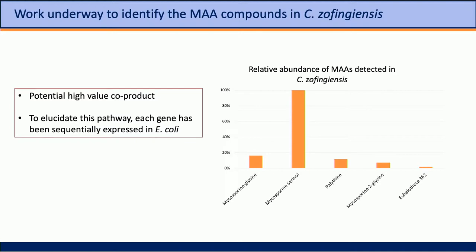In terms of genome mining, this may be of interest as a potential high-value co-product. Work is underway with a collaborator in Trent Northen's lab at Lawrence Berkeley National Lab to identify the MAA compounds in Chromochloris. These are preliminary results of MAAs detected in Chromochloris by mass spec, and we've also expressed each of these genes sequentially in E. coli to better elucidate this pathway.